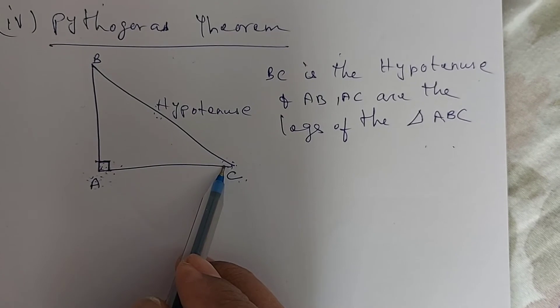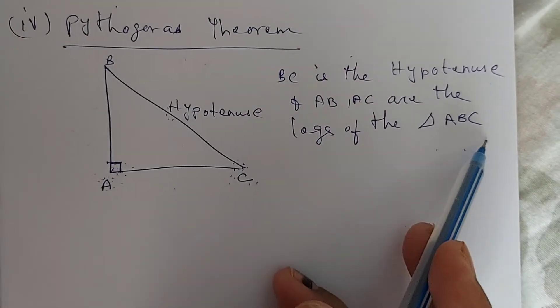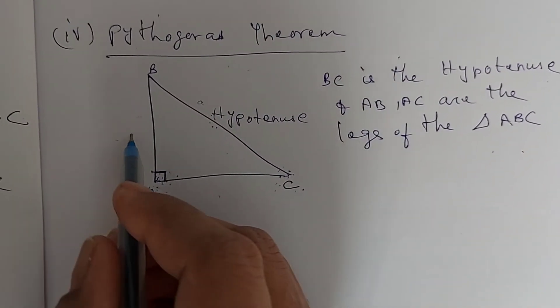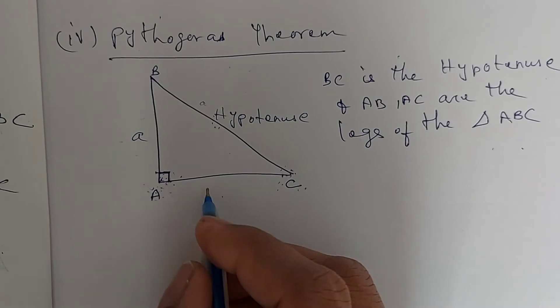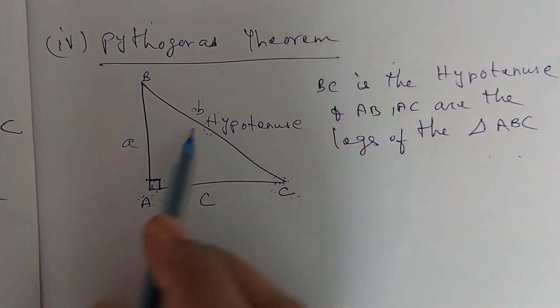The hypotenuse and other two sides are called legs of the triangle ABC. Now, let's give the sides as A, B and C.